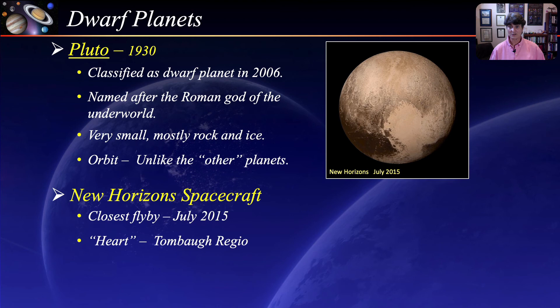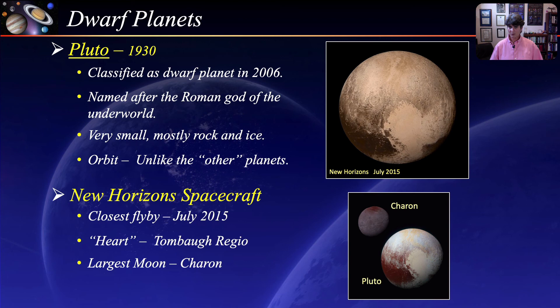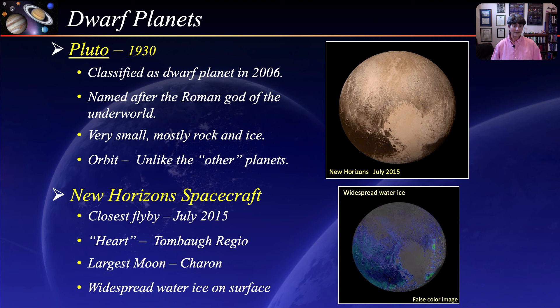Pluto has five moons. This is a color-enhanced image from New Horizons showing Pluto and its largest moon Charon. At about half the diameter of Pluto, Charon is the largest moon relative to its planet in the Solar System — Pluto and Charon are sometimes referred to as a double planet. Data from New Horizons points to more prevalent water ice on Pluto's surface than was previously thought, considerably more widespread than previously known. New Horizons is currently on its way to the Kuiper Belt to explore how bodies on the outskirts of the Solar System have evolved over time.